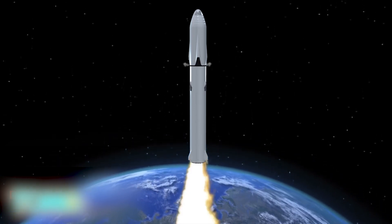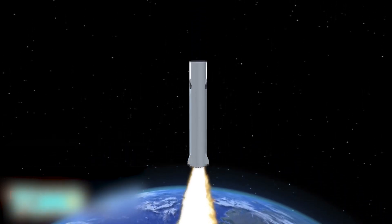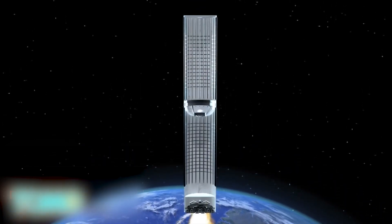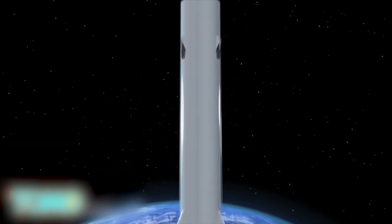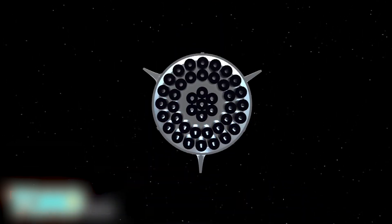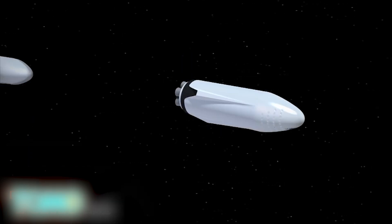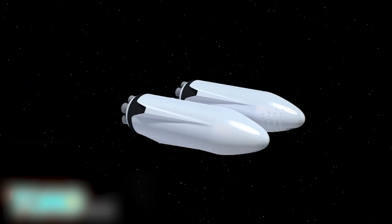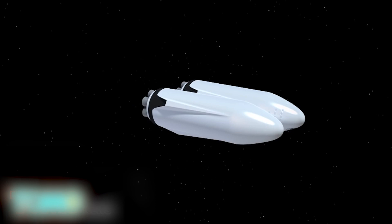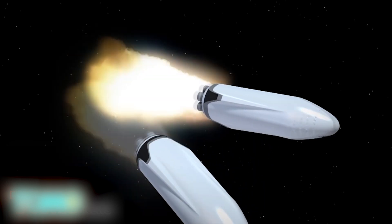The rocket booster segment of the ITS will transport the spaceship to low-Earth orbit. Both parts of the ITS would be made up of carbon fiber, while the rocket would be powered by 42 SpaceX Raptor engines. That same rocket would then return to Earth and launch again with a propellant tank. This tank then connects with the spaceship to refuel the vessel.